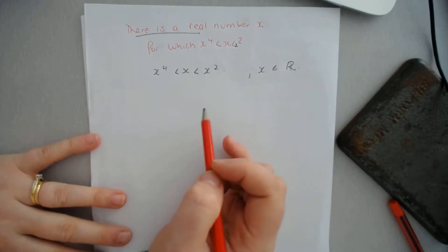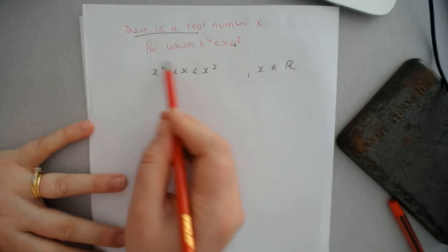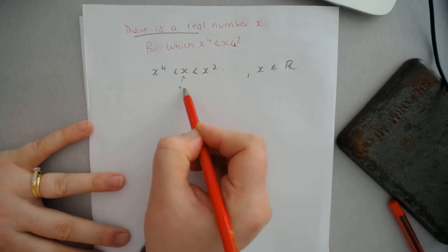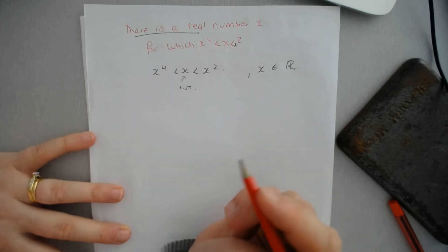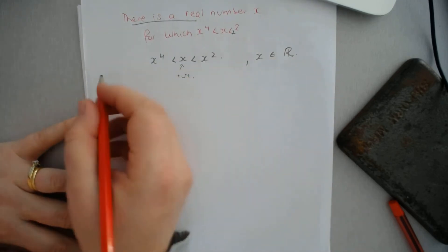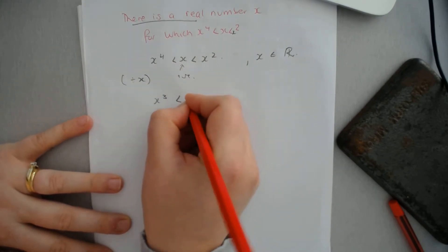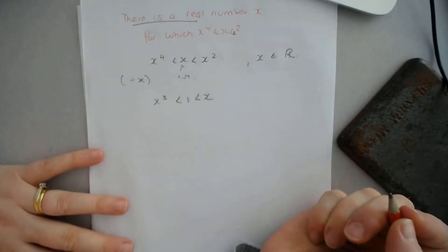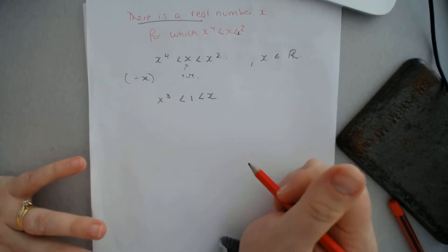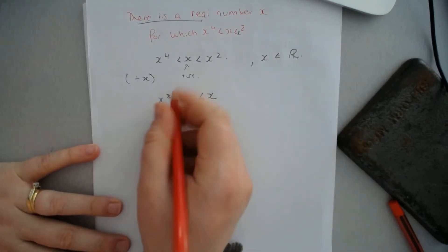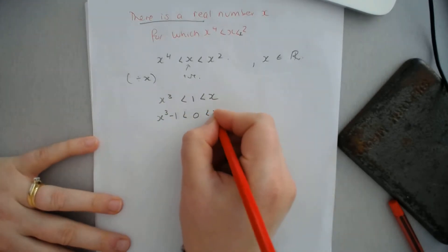Then x has to be positive because it is greater than the non-negative number x to the power of 4. If we divide all parts of this equation by the positive number x, we get x³ is less than 1, which is less than x. Now we're going to subtract 1 from all parts of this. So we get x³ minus 1, and then 1 minus 1 is 0, is less than x minus 1.